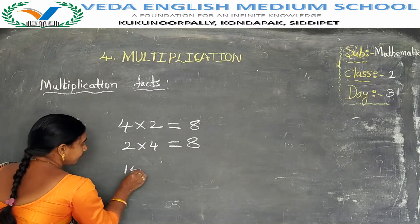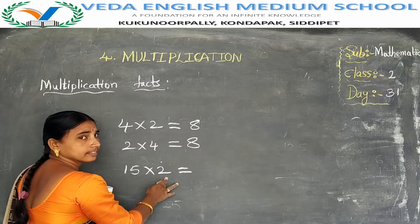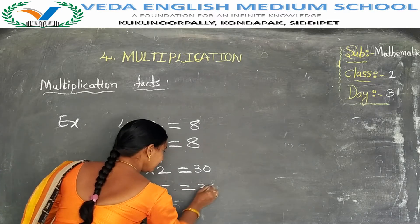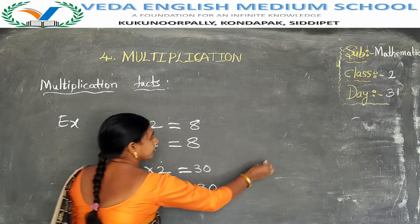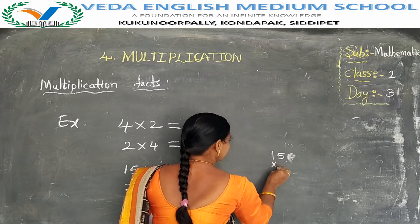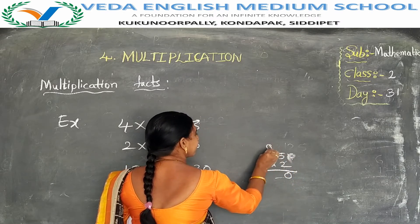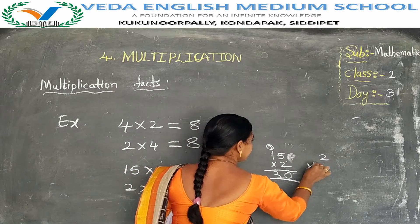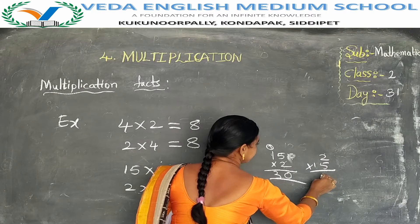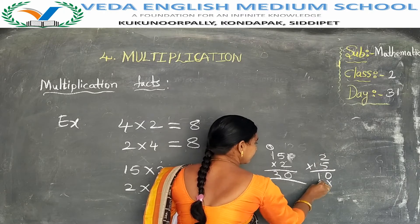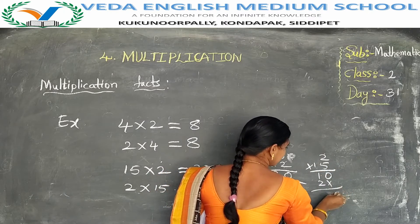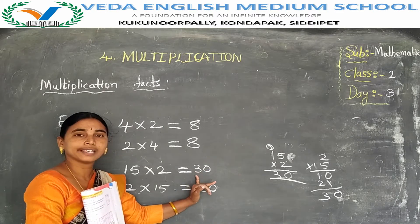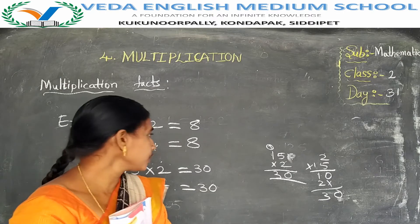One more example: 15 into 2. See: 15 into 2 — 2 by 5 is 10, carry 1; 2 by 1 is 2, plus 1 is 3 — so 15 into 2 is 30. Now 2 into 15: 5 by 2 is 10, carry 1; 1 by 2 is 2, plus 1 — also 30. Order changes, but the answer is the same.